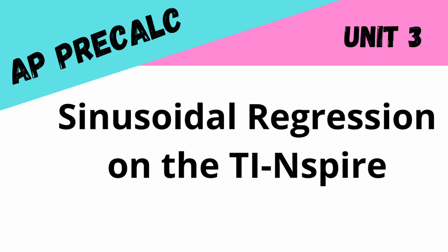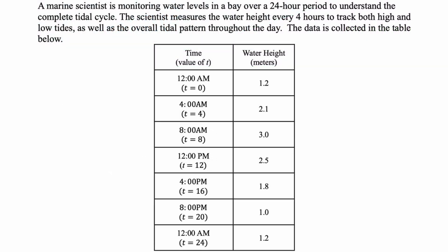We're going to look at a spreadsheet, a scatter plot, we're going to run the regression, look at the graph, all kinds of stuff. So let's take a look at the problem we're actually going to deal with. A marine scientist is monitoring water levels in a bay over a 24-hour period to understand the complete tidal cycle. A scientist measures the water height every four hours to track both high and low tides, as well as the overall tidal pattern throughout the day. The data is collected in the table below.